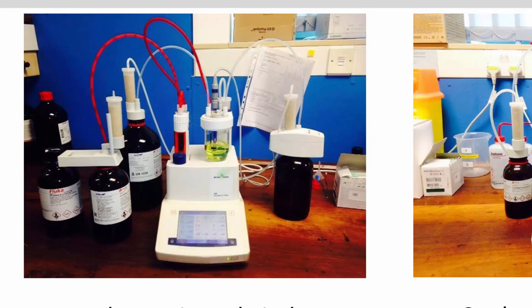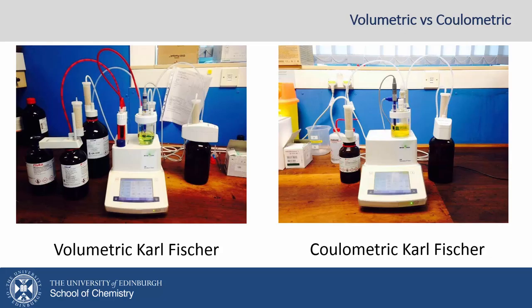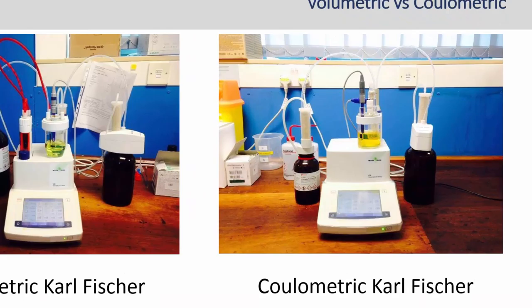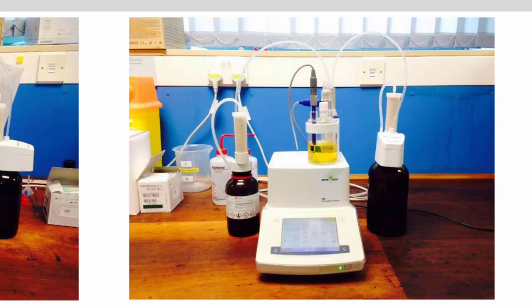In the first, volumetric Karl Fischer, iodine is added to the titration cell with the other reagents until the current — which is caused by the presence of water — no longer changes, indicating that all water is consumed. Knowing the amount of iodine added means that the amount of water present can be deduced using the molar ratio in the reaction scheme.